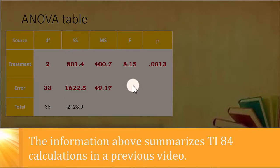For error, 33 degrees of freedom, 1622.5 sum of squares, 49.17 mean square, and then an F value of 8.15 and a P value of .0013.